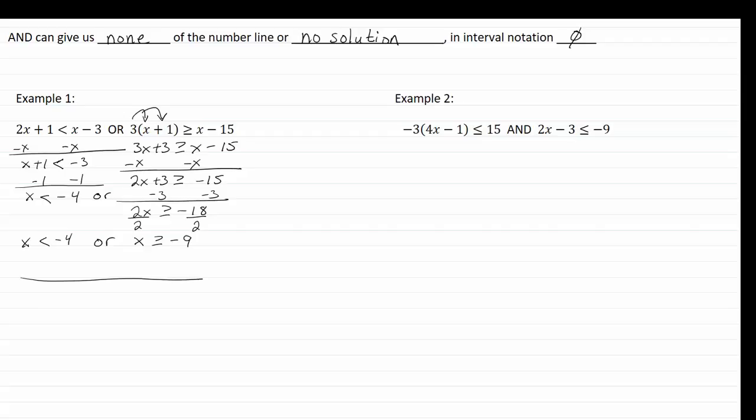So if we look at this on our number line, we've got negative nine down here, and then negative four. Our negative four is going to be an open dot, x is less than that, so that's going to negative infinity.